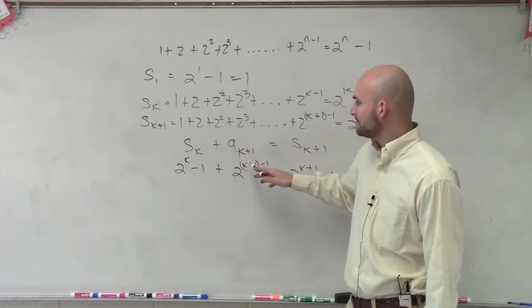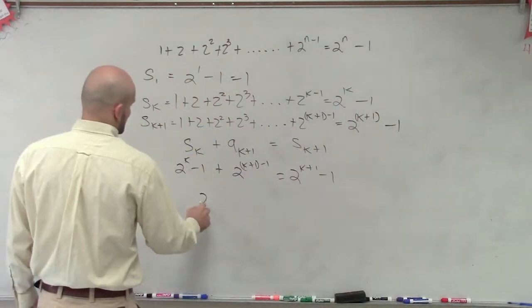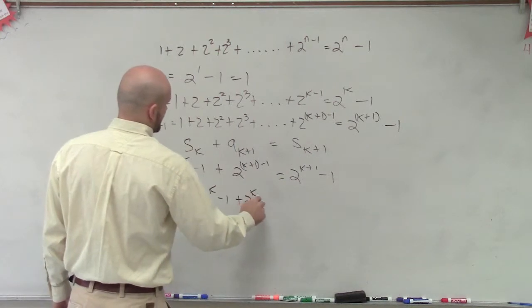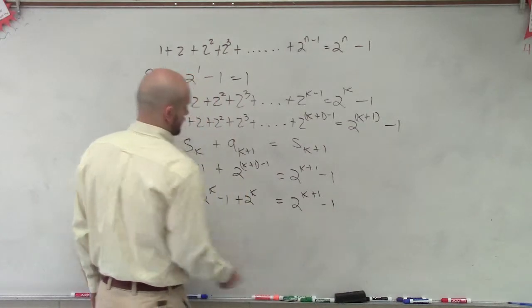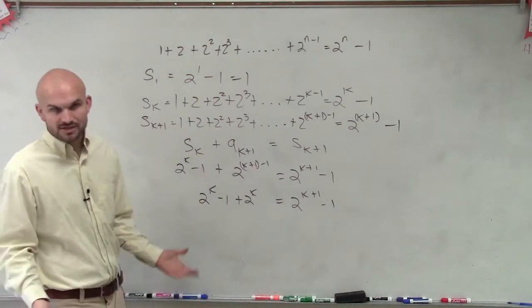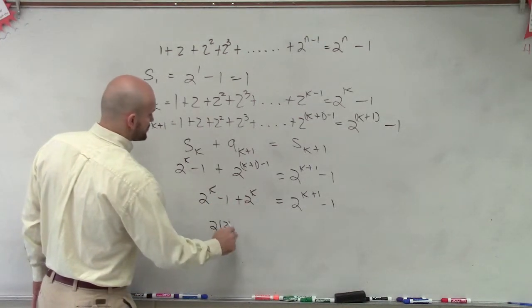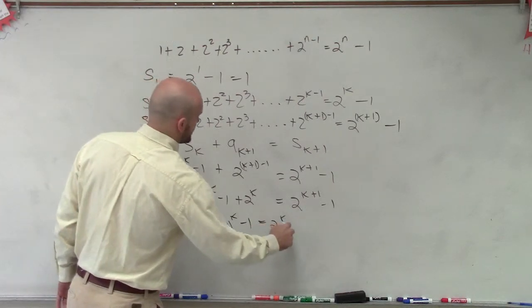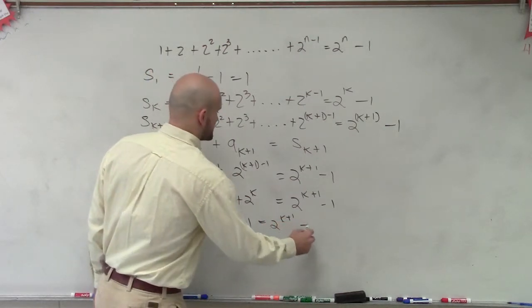So now let's simplify. Well, I can't do anything here. But here, if I have k plus 1 minus 1, that's just 2 to the k, right? So now I have 2 to the k minus 1 plus 2 to the k equals here, I can't simplify. All right. But now I have 2 to the k raised to the 2 to the k. That's like x squared plus x squared, right? Which would be 2x squared. So this is 2 times 2 raised to the k minus 1 equals 2 to the k plus 1 minus 1.